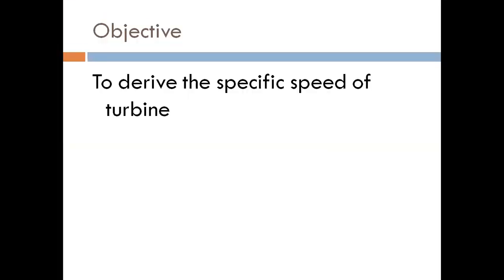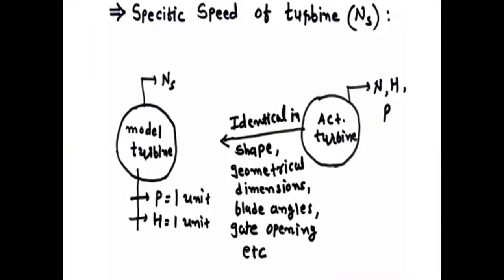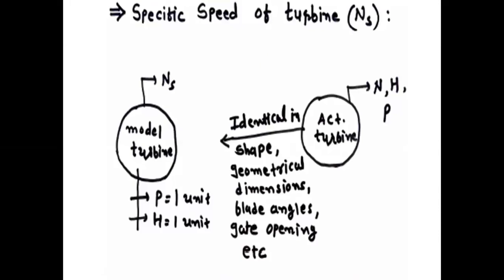The objective of this video is to derive the specific speed of turbine, denoted by Ns. Let us first understand the concept. Take one actual turbine which is operated under H meter head, producing P kilowatt power, and its speed is N RPM.